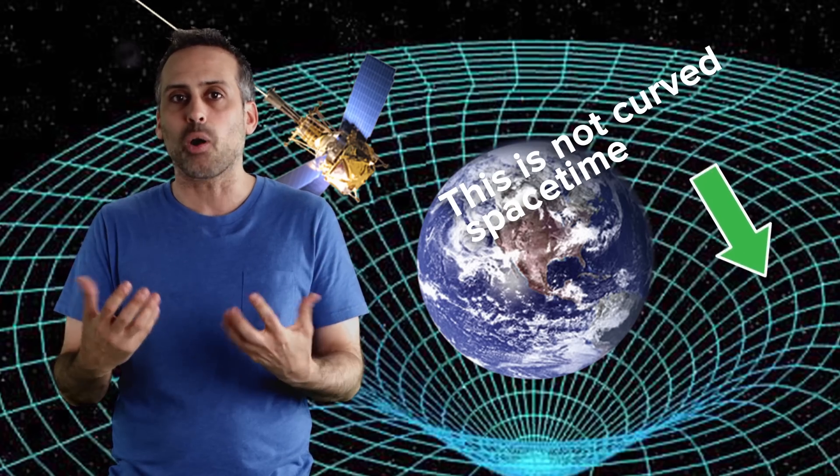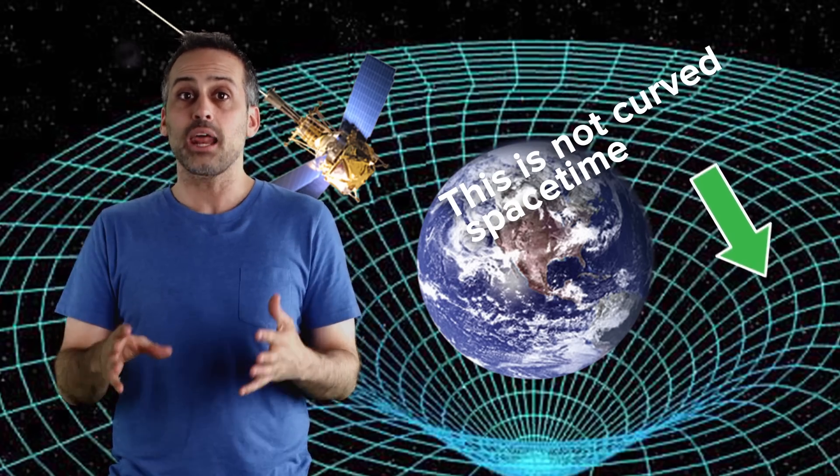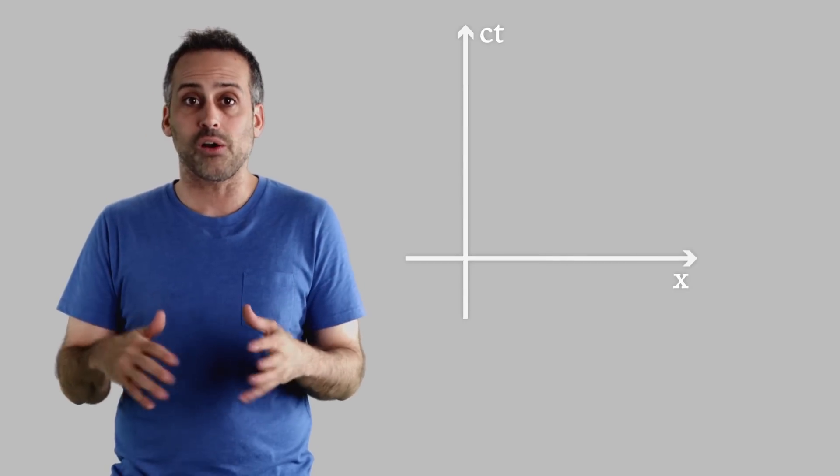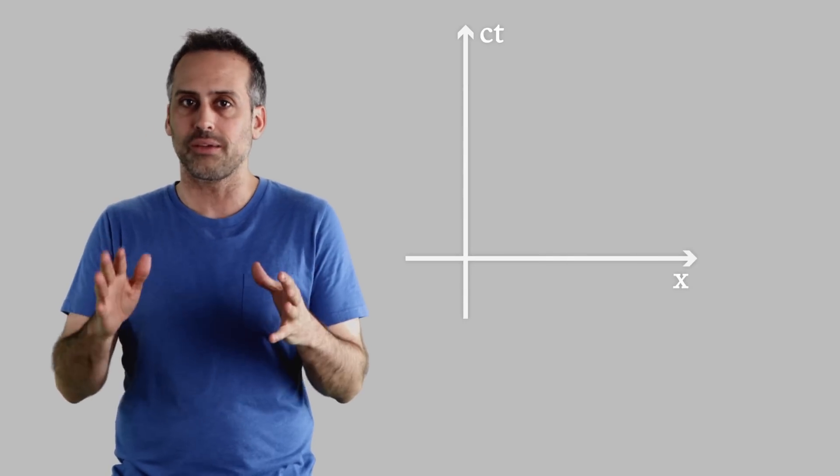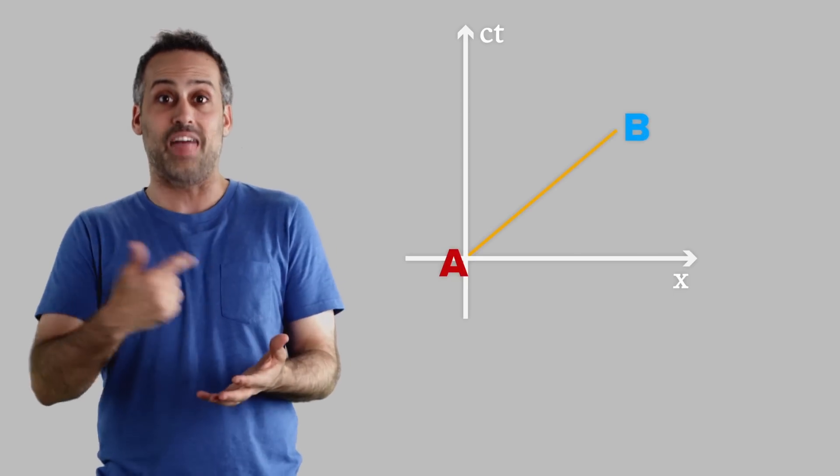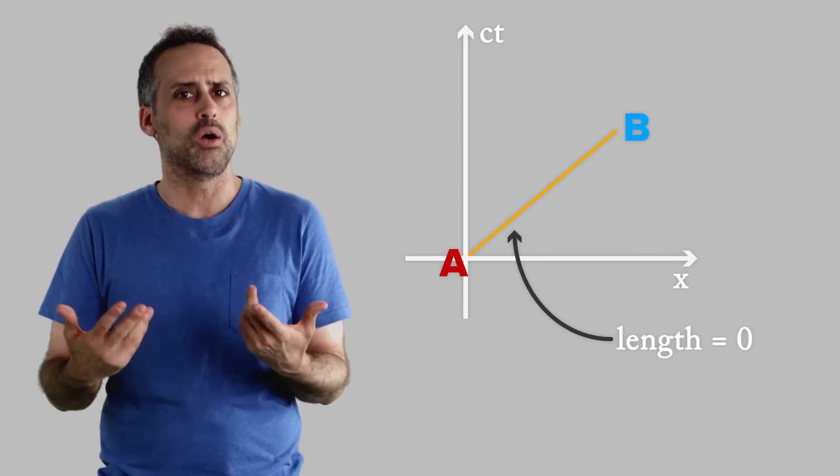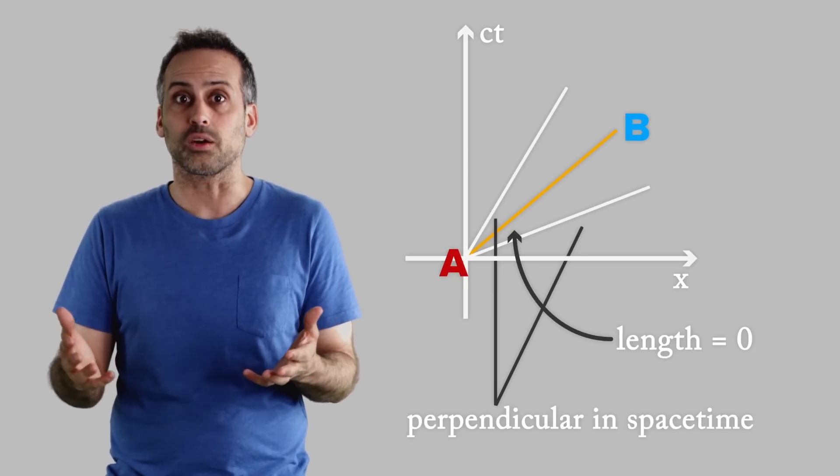Why is the spacetime part so critical? To understand that, we need to get a better grip on how geometry works in flat spacetime. And remember, even without curvature, that geometry is super weird. Let me give you an example. In flat spacetime, that line has a length of zero. And these two lines are perpendicular. You see what I'm talking about? It's weird. But I'm getting ahead of myself. Flat spacetime geometry is part two, which is next week.